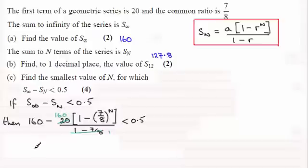So if I expand out the bracket here, we've got minus 160 times 1, which is minus 160, and then plus—negative with negative gives plus—160 times (7/8) to the power n, and that must be less than 0.5.